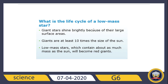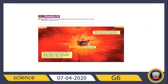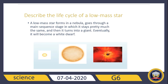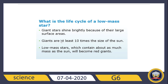Giant stars shine brightly because of their large surface areas. As we can see here in this image, here we have the giant star. Giants are at least ten times the size of the sun. Low mass stars, which contain about as much mass as the sun, will become red giants. So these are the two main features of low mass stars: they are large — at least ten times the size of the sun — and they have a red color. Red giant stars are what low mass stars become.